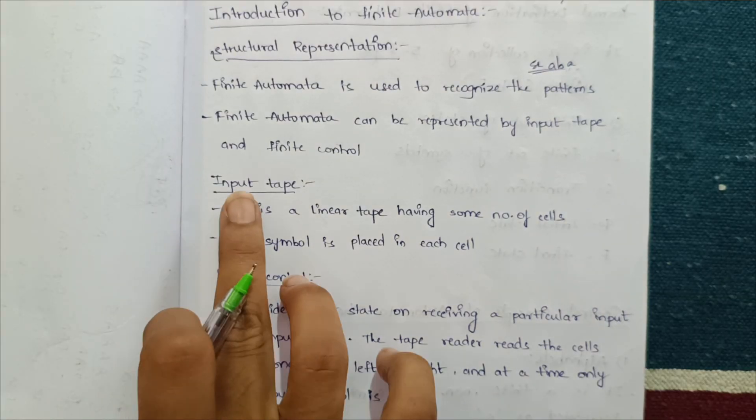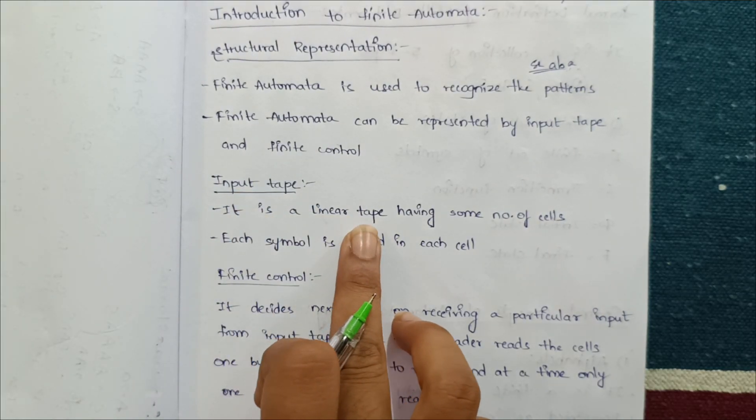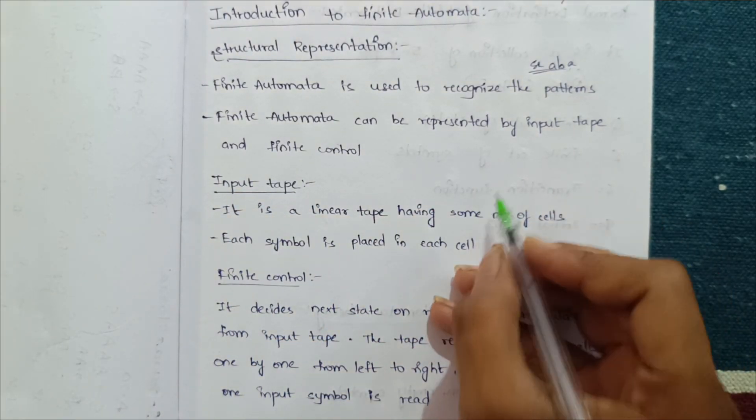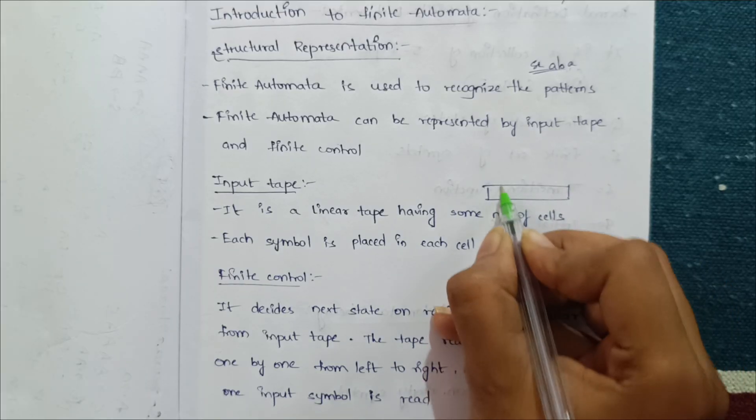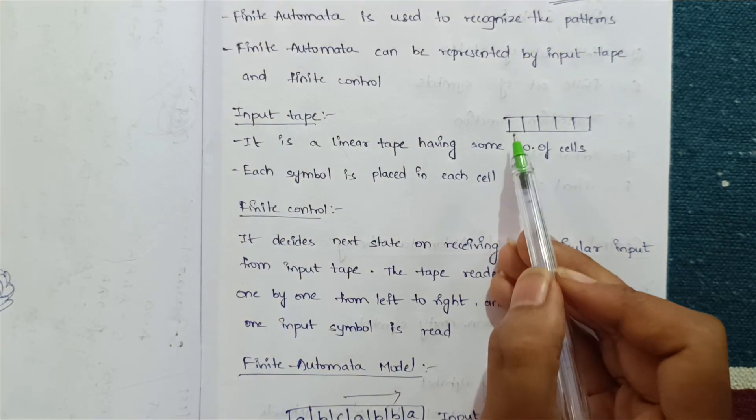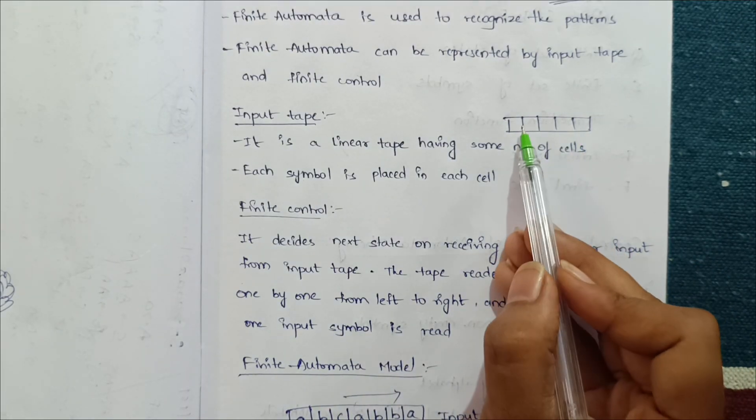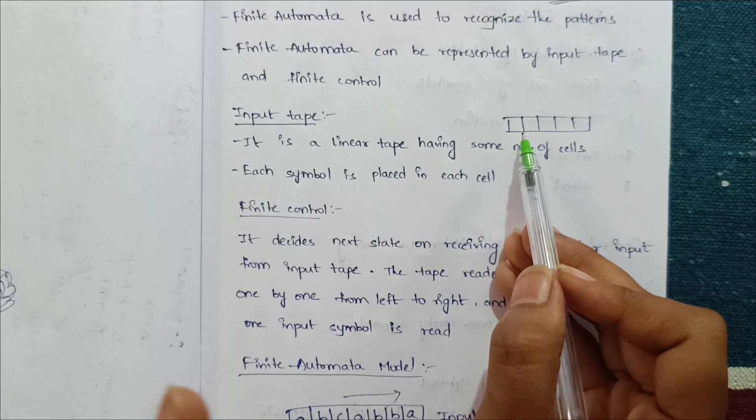Input tape is a linear tape having a number of cells. For example, there are a number of cells, and in each cell a particular one input symbol is placed in each cell.